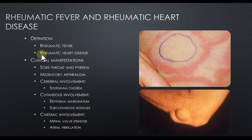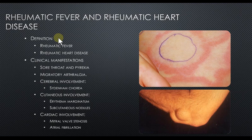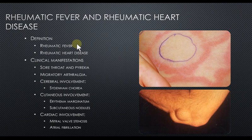The next part of the lecture covers rheumatic fever and rheumatic heart disease. Rheumatic fever is an autoimmune condition that usually follows an upper respiratory tract infection with beta-hemolytic streptococcal infection. It may progress to involve the heart, causing what is known as chronic rheumatic carditis, which can cause valve damage.